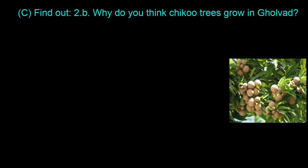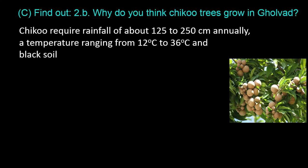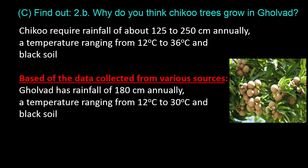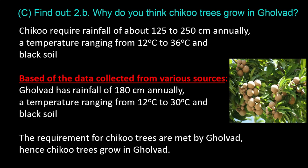Question C.2.B: Why do Chiku trees grow in Golvad? Chiku requires rainfall of about 125 to 250 centimeters annually, a temperature ranging from 12 to 36 degrees Celsius, and black soil. Based on data collected from various sources, Golvad has rainfall of 180 centimeters annually, a temperature ranging from 12 to 30 degrees Celsius, and black soil. The requirements for Chiku trees are met by Golvad, hence Chiku trees grow in Golvad.